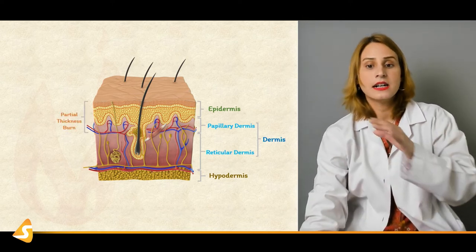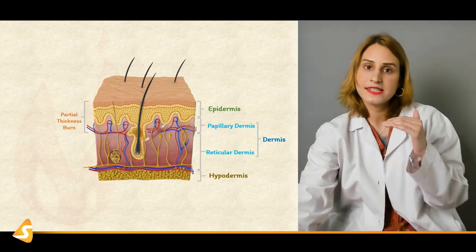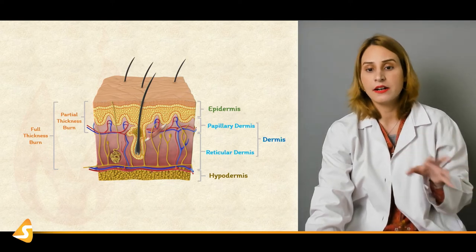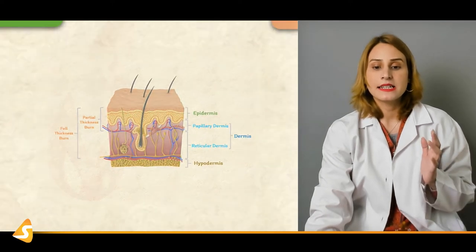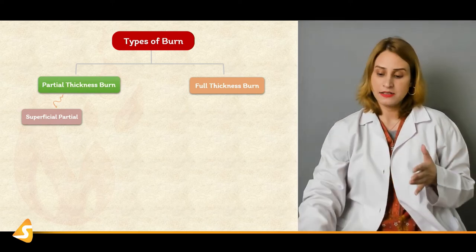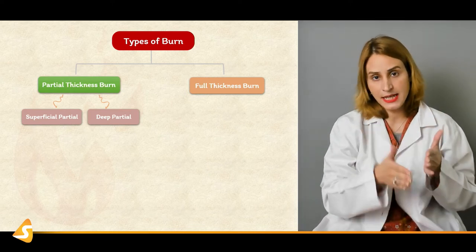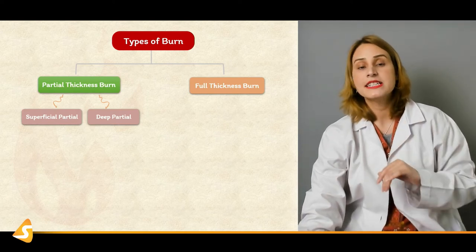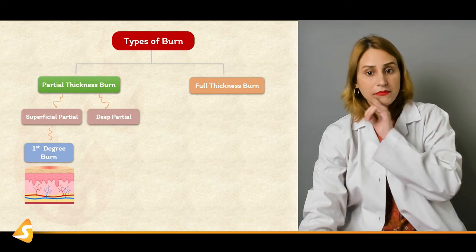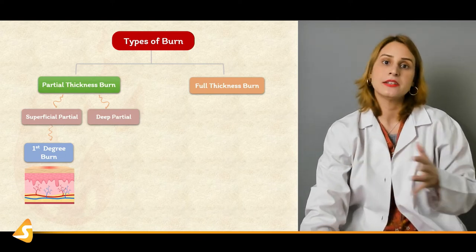Broadly categorizing: we have the partial thickness burn — involving the epidermis and the papillary part of the dermis. The full thickness burn comprises all layers: epidermis, papillary dermis, reticular dermis, and the hypodermis. So superficial partial is the first degree burn, deep partial is the second degree burn, and full thickness is divided into third degree and fourth degree burn. A superficial partial thickness would be a first degree burn; superficial partial thickness would be second degree; deep partial would be a third degree; and full thickness would be fourth degree burn.